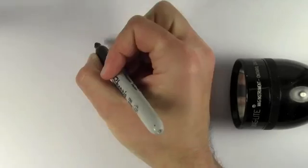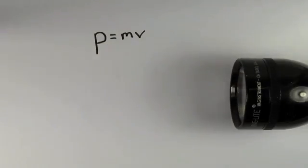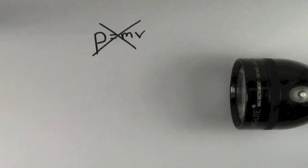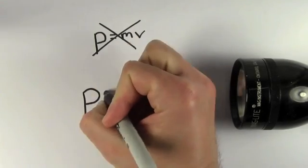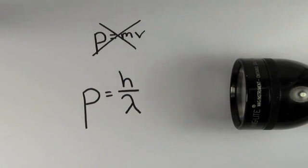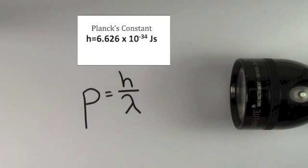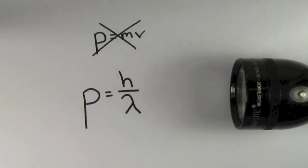Alright, so the bad news is that we cannot use p equals mv to find the momentum of a photon. The good news is that the formula for the momentum of a photon is simple. The momentum of a photon equals h over lambda. H is Planck's constant, 6.626 times 10 to the negative 34th joule seconds. Lambda is the wavelength of the light in meters. Be careful, don't use nanometers, you have to convert to meters.